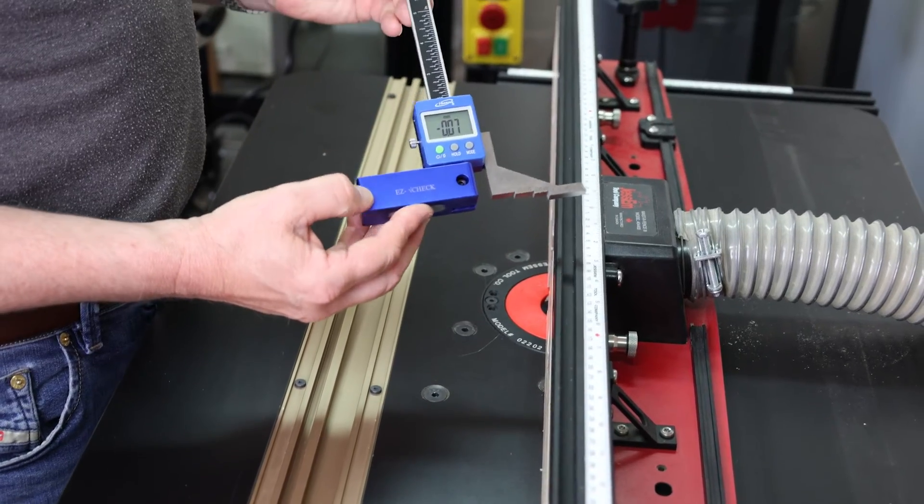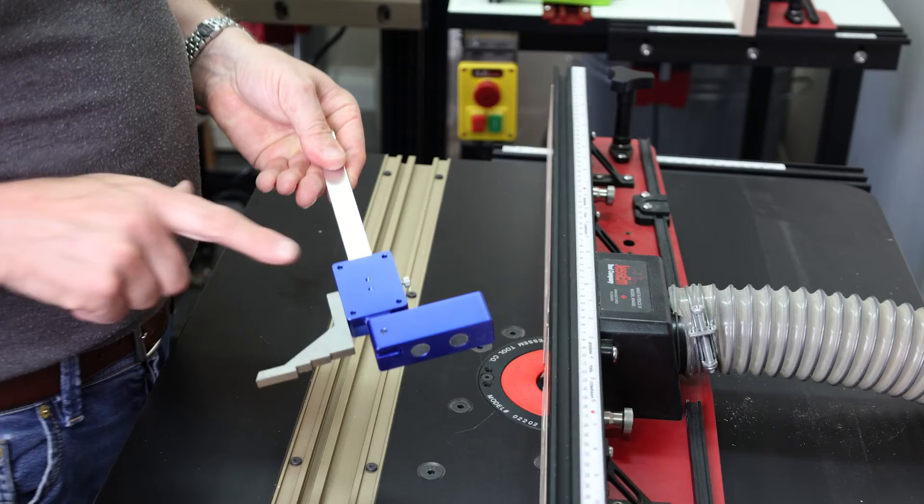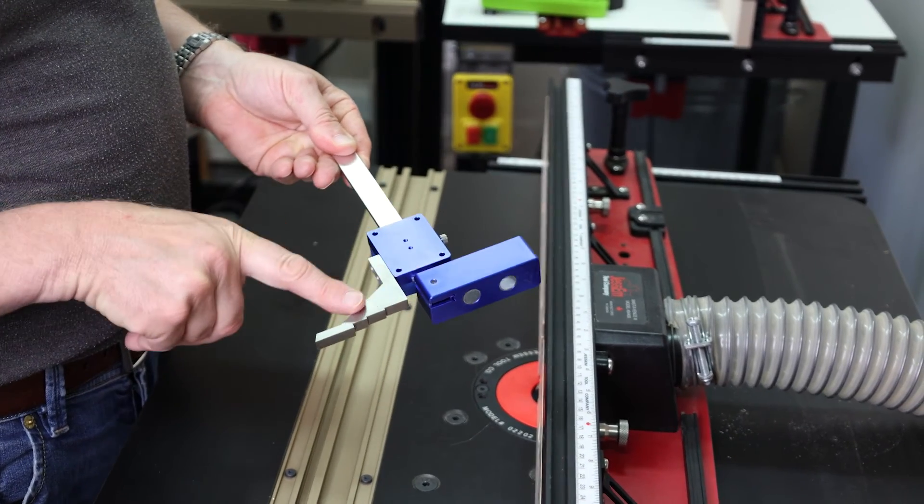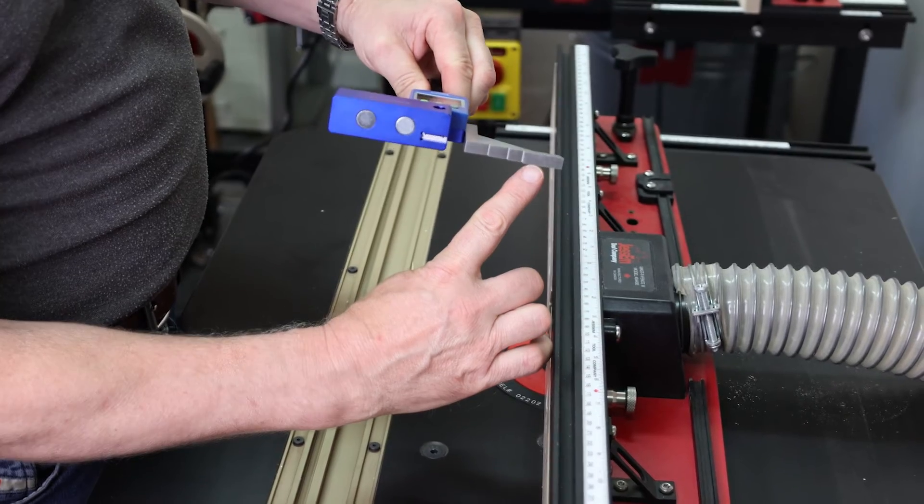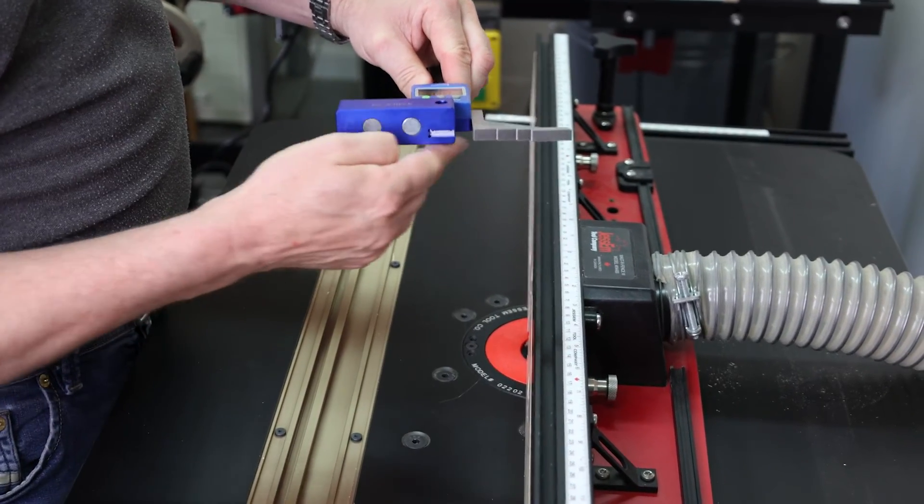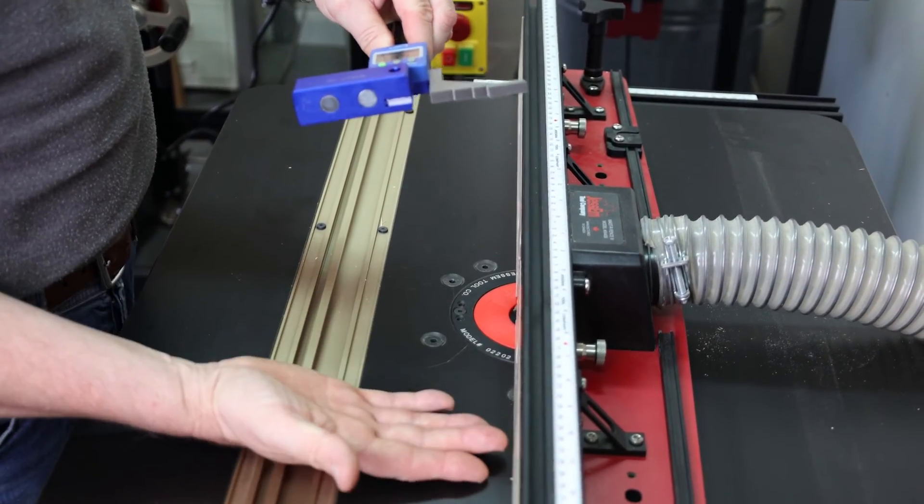One unique feature of the EZ-Check is that the back is really very flat, which means that you can make adjustments or measurements for things that are only just above the surface of your bed.